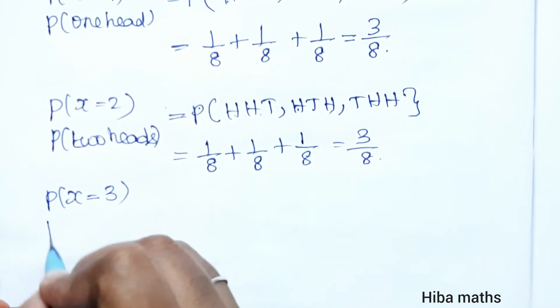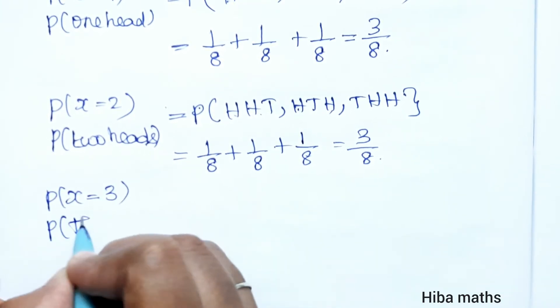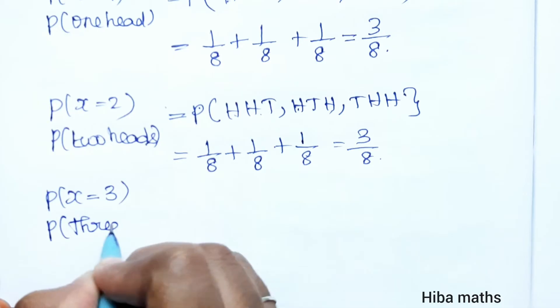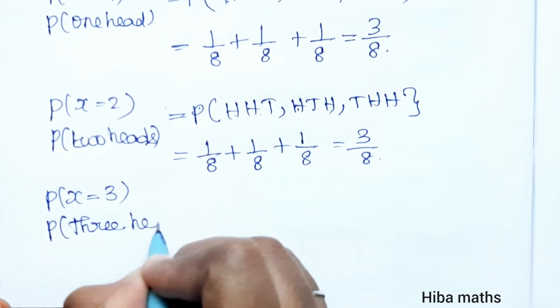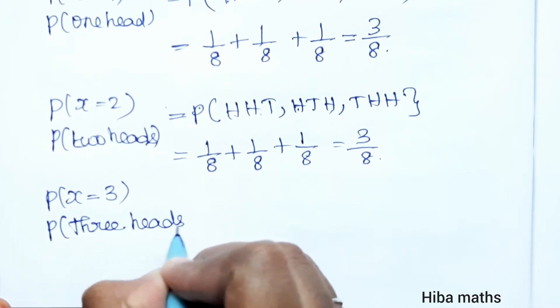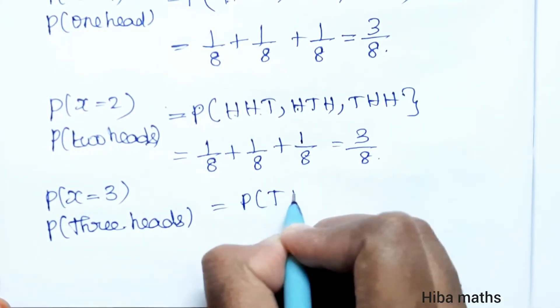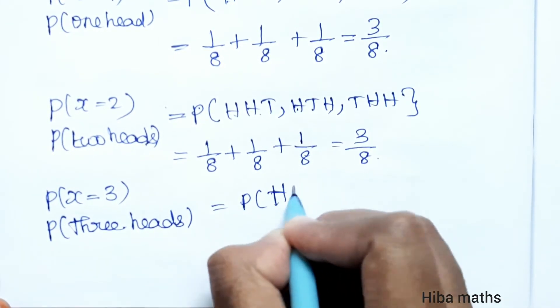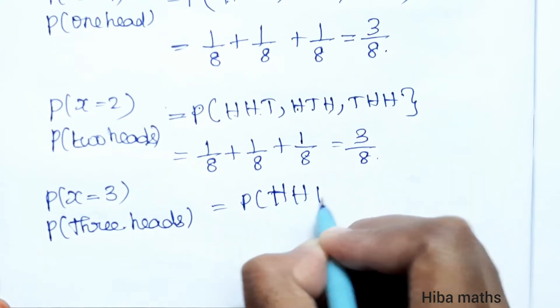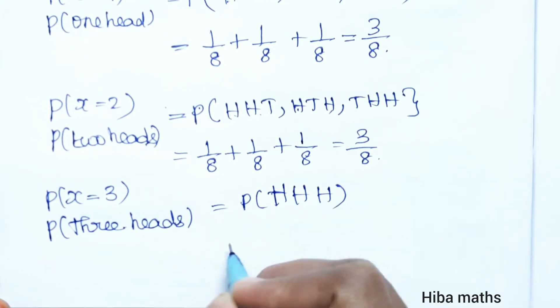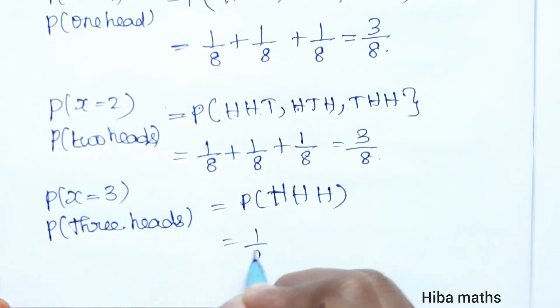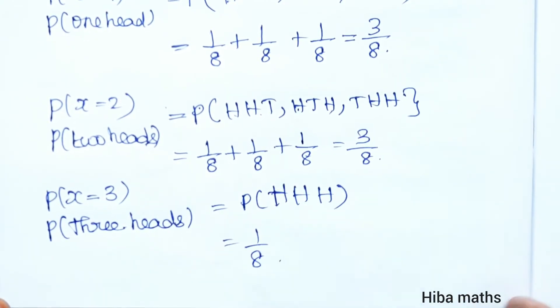P(X = 3): all three heads — HHH. There is only one such possibility, so P(X = 3) = 1/8.